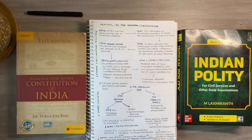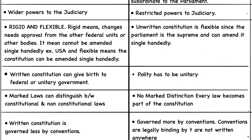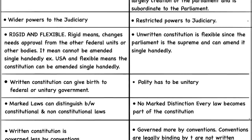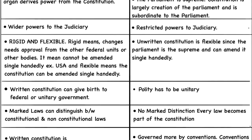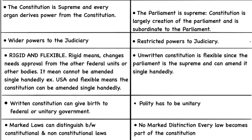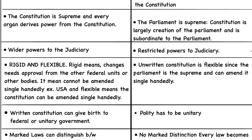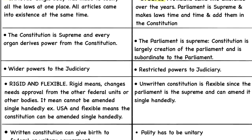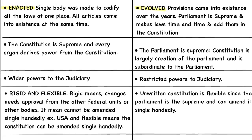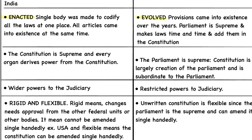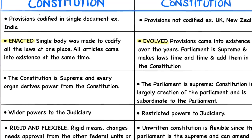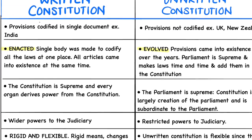The Indian constitution is a written constitution, unlike the constitution of England, which is unwritten. An unwritten constitution evolves over a long period of time and there is no specific body constituted for that purpose. Whereas in the case of a written constitution, there is a specific body constituted for the purpose of making the constitution. A written constitution is codified and compiled in a structured manner.